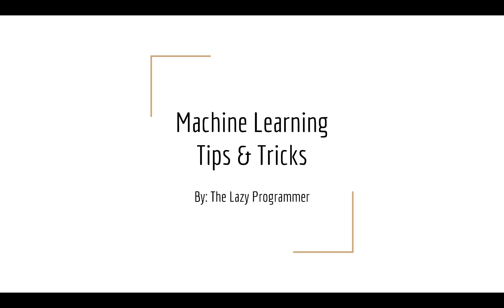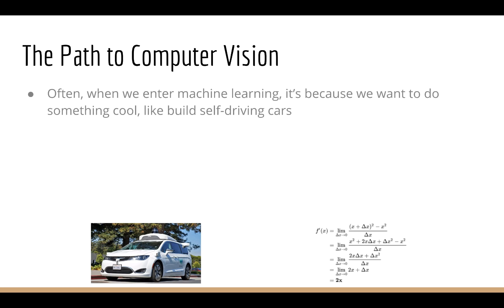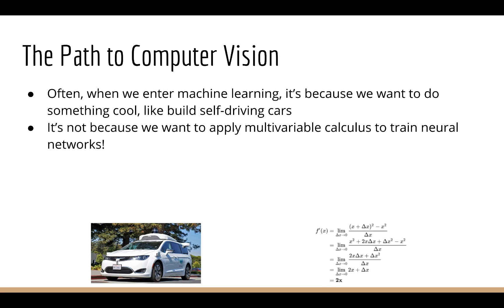Hey everyone, and welcome back to this class. In this lecture, I want to answer a question I've been getting a lot recently. It's often the case that students hear about some advanced, high-level concept, and they think that it's really cool. And that's what makes them interested in machine learning. We want to answer questions like, how can I build a self-driving car? Not, how can I apply multivariable calculus to neural networks? One of these sounds really cool, the other sounds really geeky.